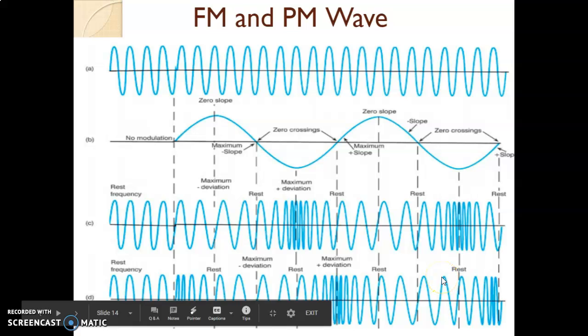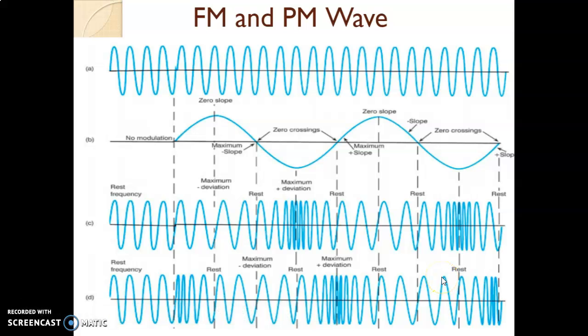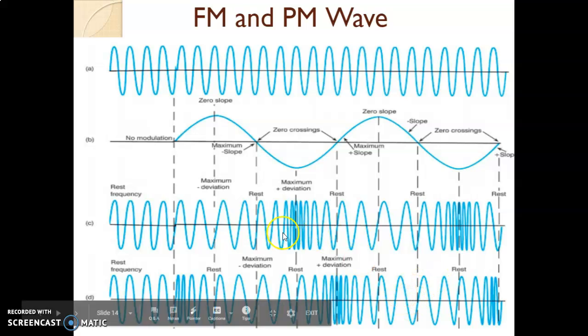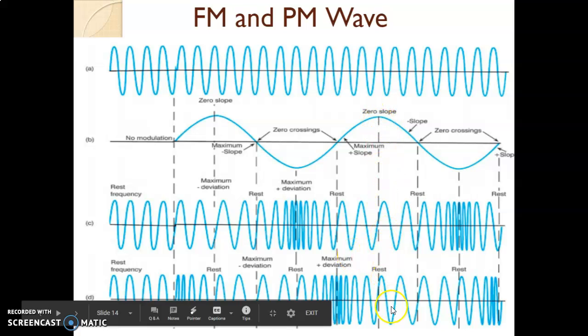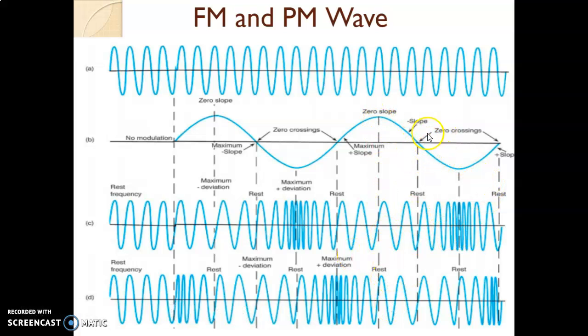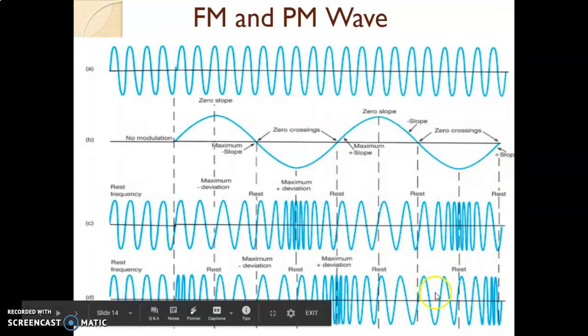The important point to remember: in frequency modulation, the maximum frequency deviation will be at the peak — positive peak or negative peak. In case of phase modulation, the maximum deviation will be during zero crossing, because at zero crossing the phase is going to change from positive to negative or negative to positive. At each zero crossing there is a maximum slope corresponding to maximum deviation. Wherever there is a zero crossing, that time you are getting a proper deviation.